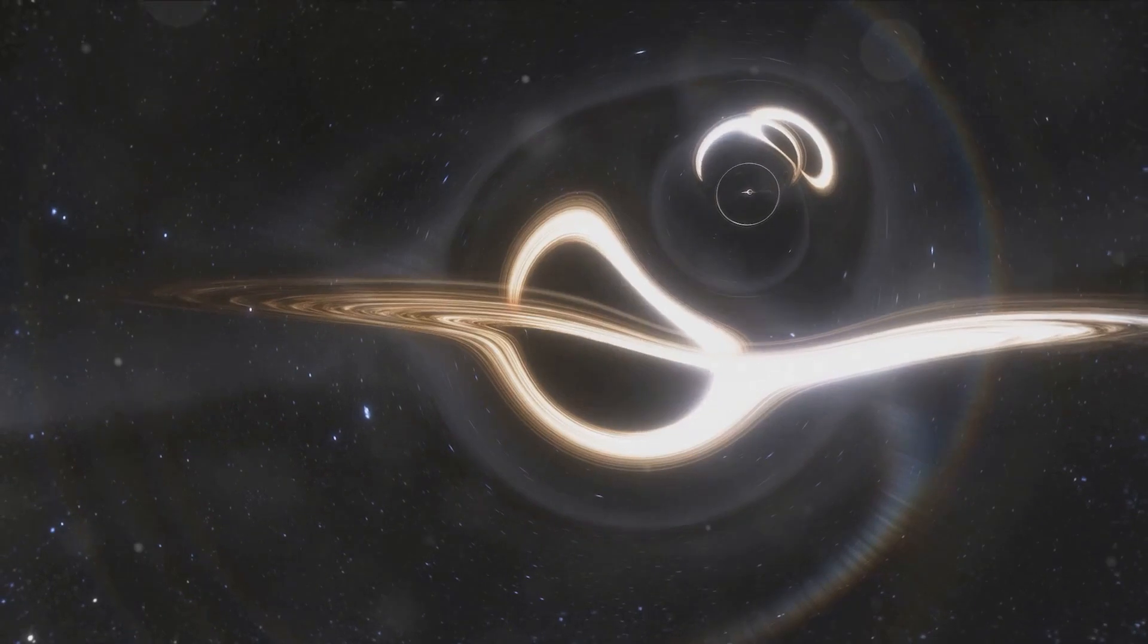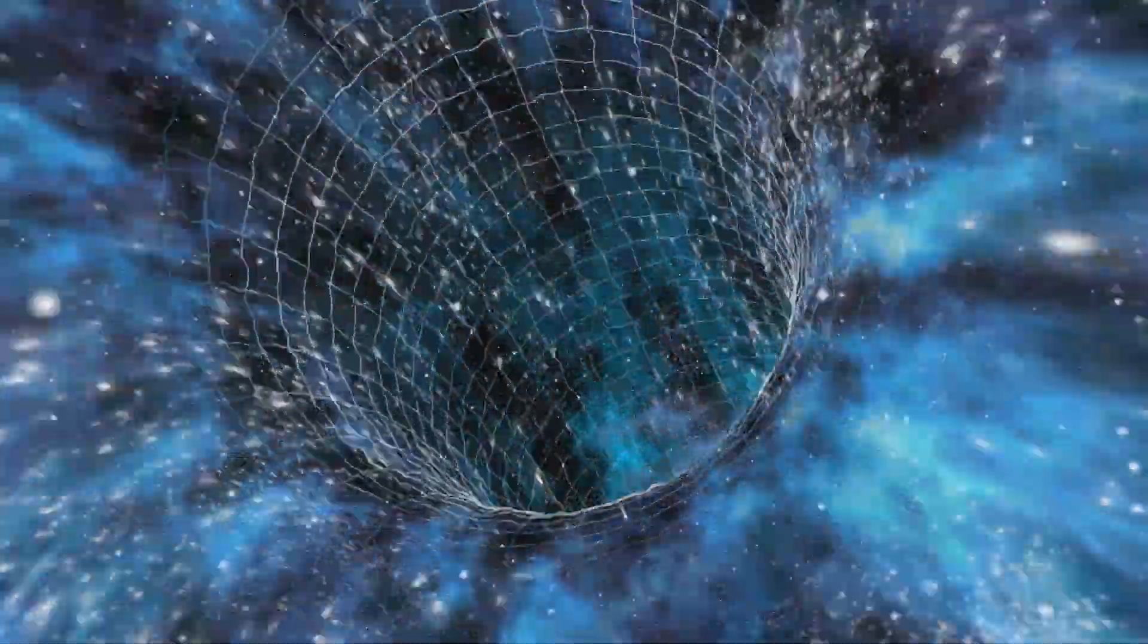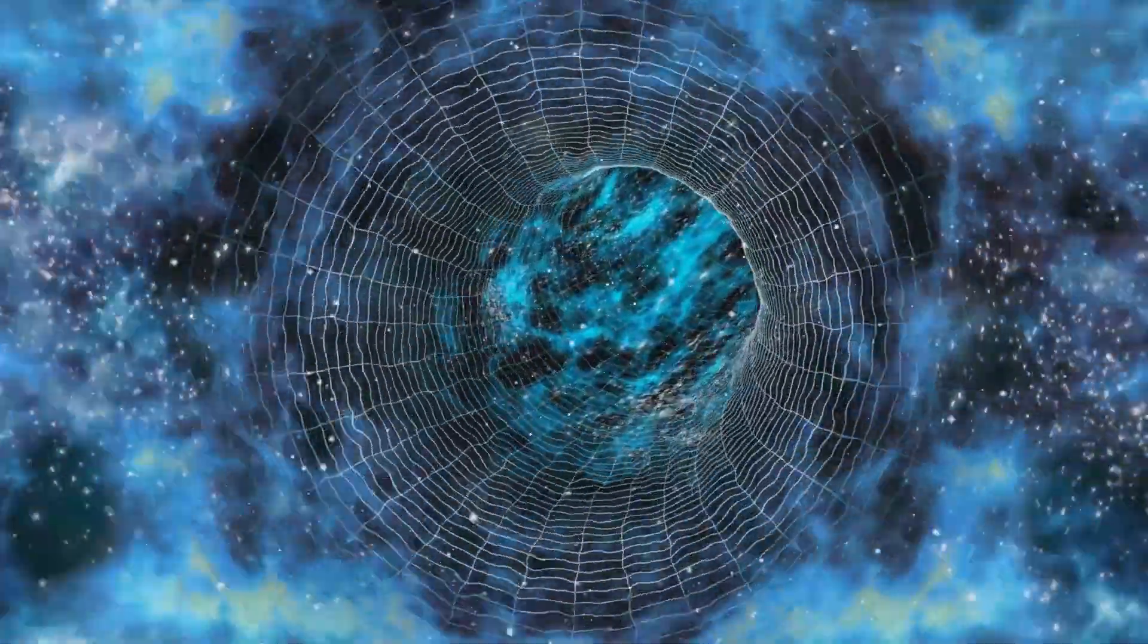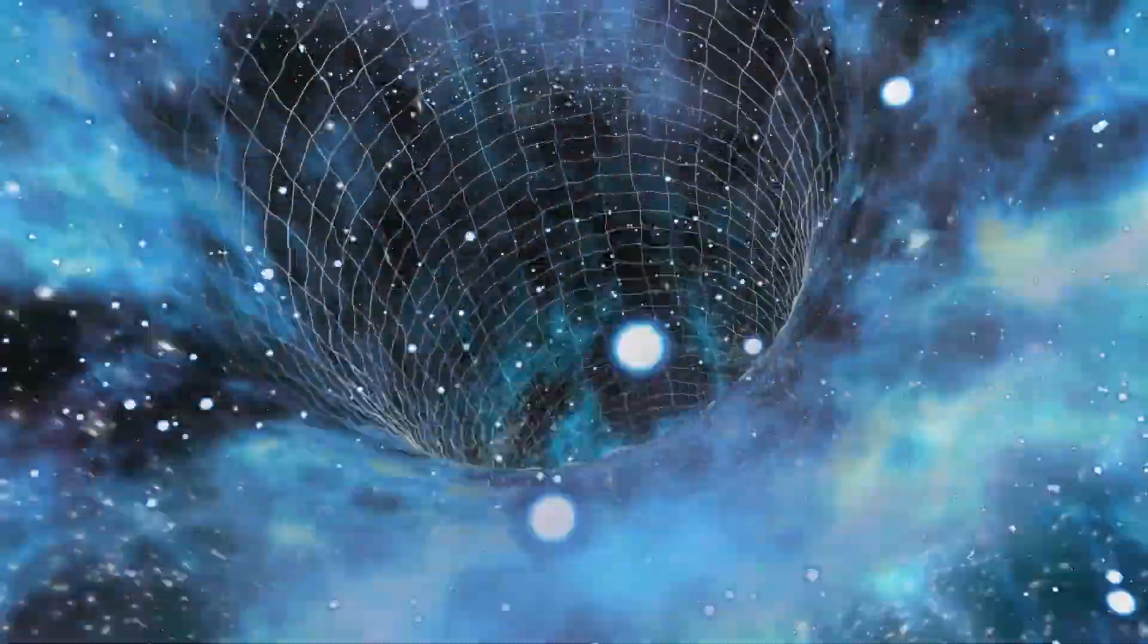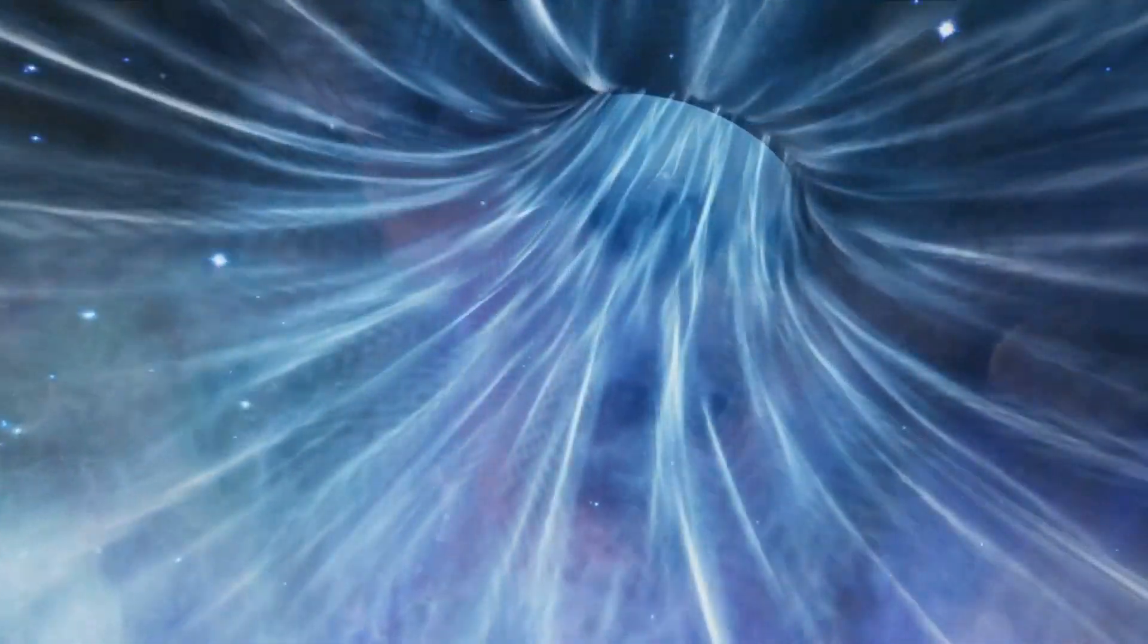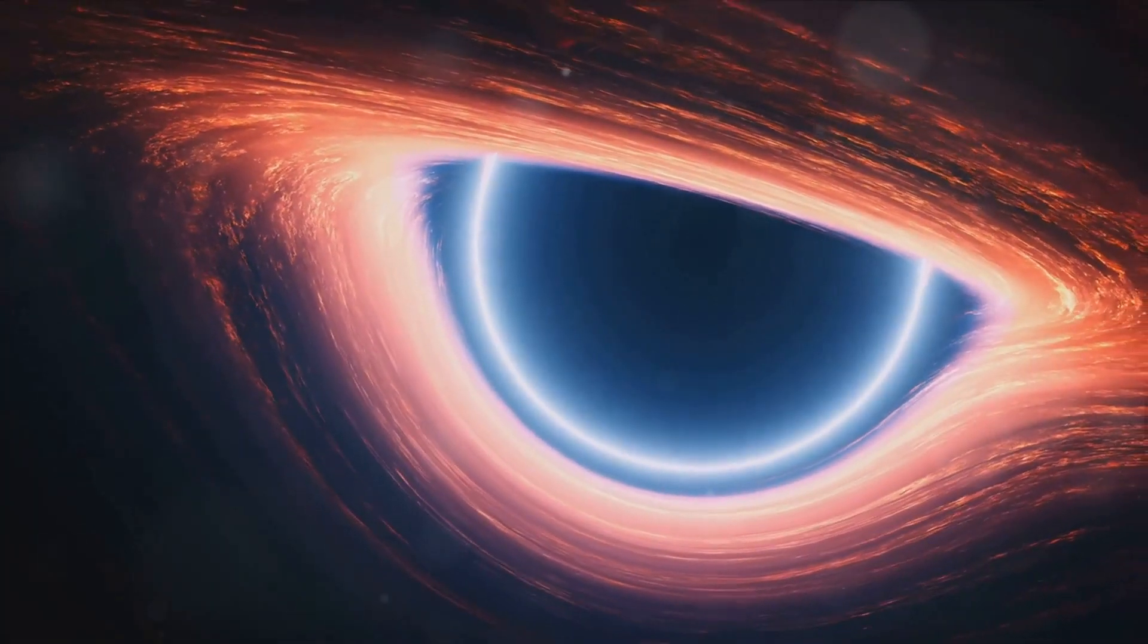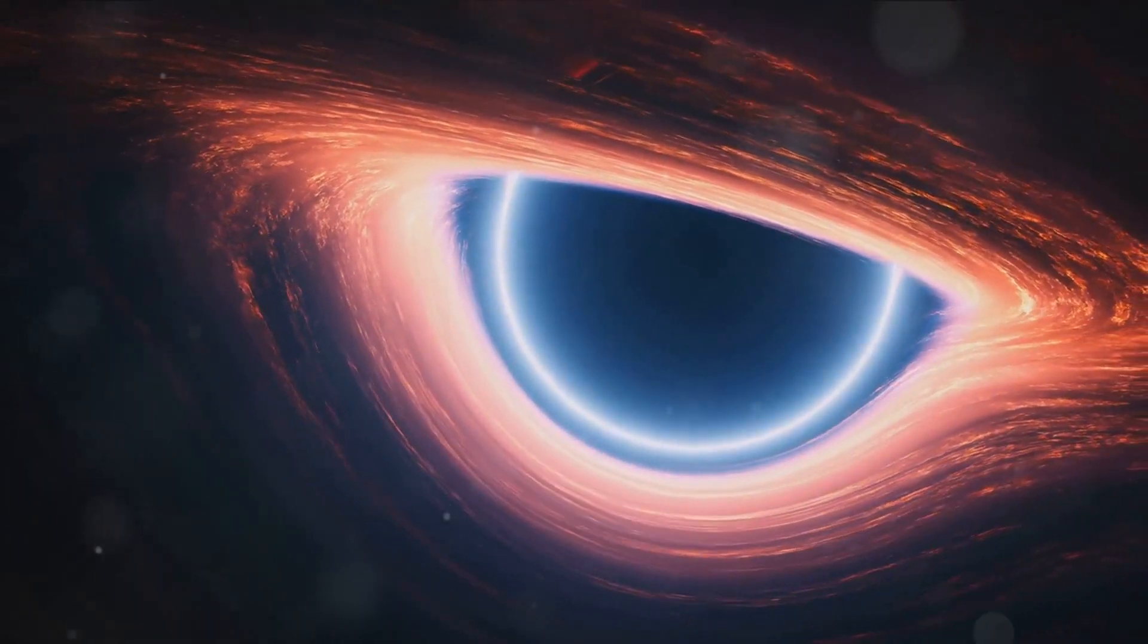However, they remain purely theoretical, as we've yet to detect a real one. So, how do they work? Well, imagine you're at point A, and you want to get to point B. In a universe without wormholes, you'd have to travel the old-fashioned way, across space. But if there's a wormhole connecting these points, you'd step into it at point A, and emerge at point B, having traversed an entirely different dimension. Sounds like the perfect solution for space travel, doesn't it? But it's not that simple.